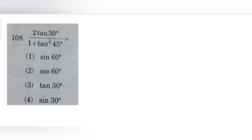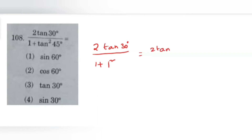Coming to question 108: 2 tan 30 degrees by 1 plus tan squared 45 degrees equals? Since the options are in sine, cos or tan, let us keep 2 tan 30 degrees as it is. Substituting tan 45 equals 1: the denominator becomes 1 plus 1 squared, which is 1 plus 1 equals 2. This 2 in the numerator and denominator cancel, giving tan 30 degrees. Our option is option number 3.